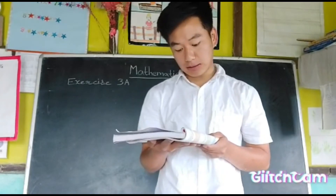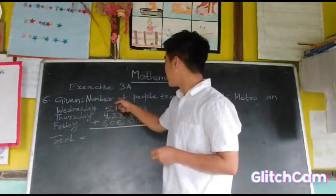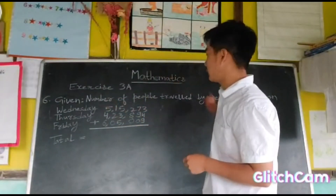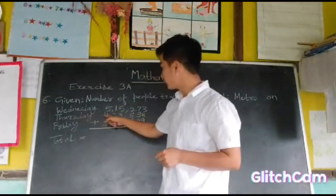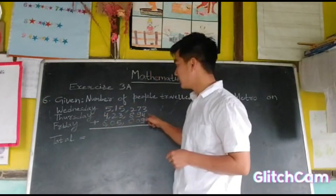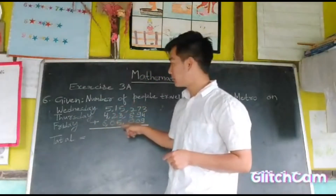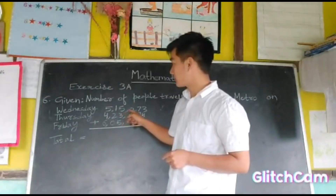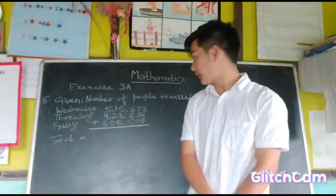The question is asking you to find the total number of people who travelled by Delhi Metro on Wednesday, Thursday, and Friday. To find the total you have to do addition, and after finding the answer you also have to write it in words. So the given numbers are: Wednesday — five lakh fifteen thousand two hundred and seventy three, Thursday — four lakh twenty three thousand eight hundred and ninety four, Friday — six lakh five thousand and nine. To find the total we have to do addition.